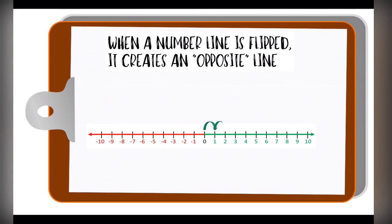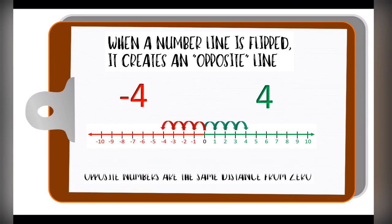Let's take a look at this. If I move from 0 to the right 4 spaces, I end up at positive 4. Now if I move to the left from 0, 4 spaces, I end up at negative 4. That's because opposite numbers are the same distance from 0.